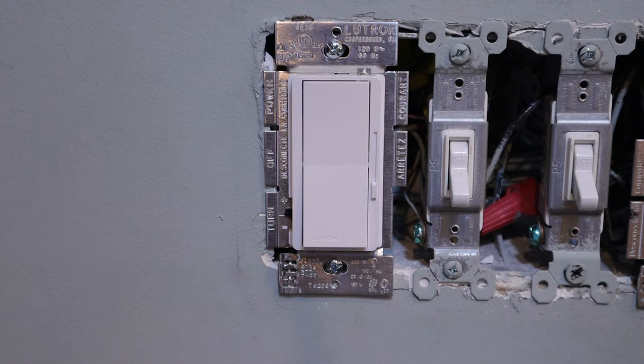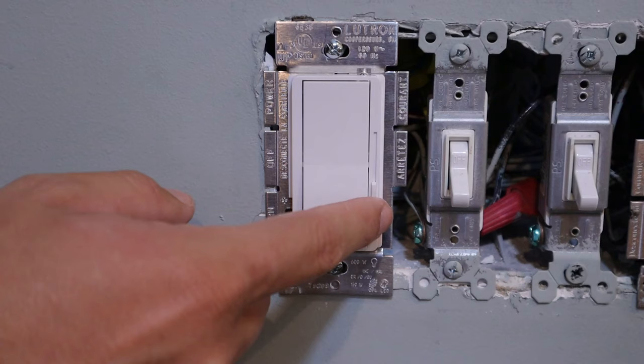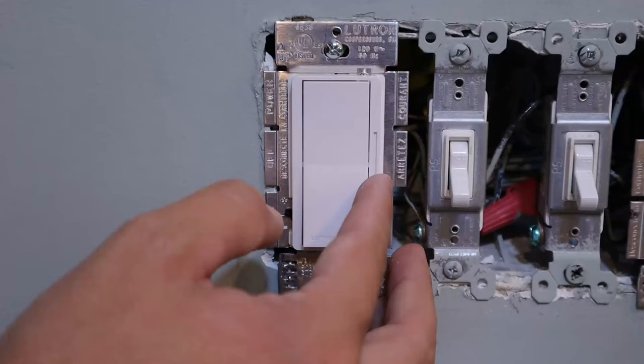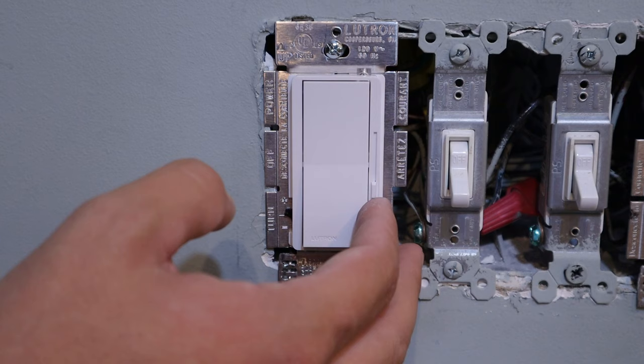And so again, this is just the toggle that turns it on and off. And of course, over here on the right, this is then, this is why you bought this switch. This is what then adjusts the brightness or how dim you want the room to be for your particular light.